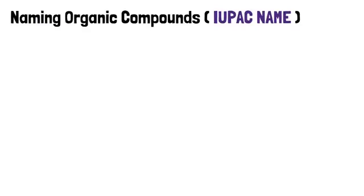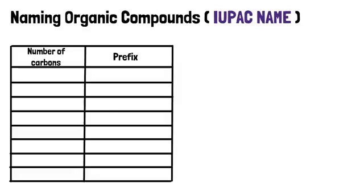Now let's move on to IUPAC naming, or the naming of organic compounds. When you're given a structure, you have to know how to write the condensed structural formula, the molecular formula, as well as the IUPAC name that describes what it is.